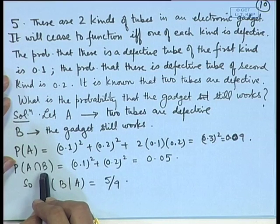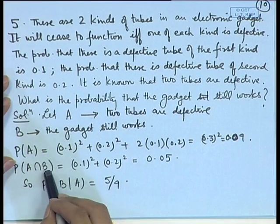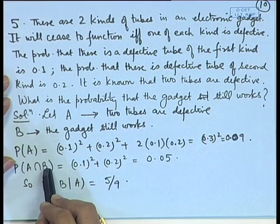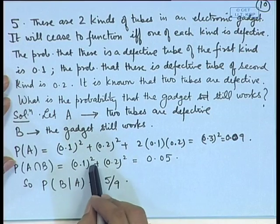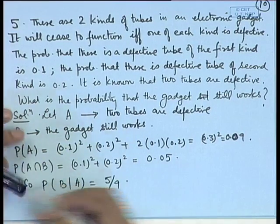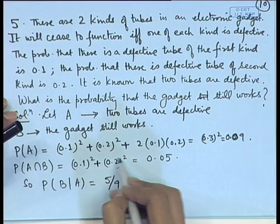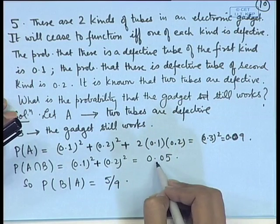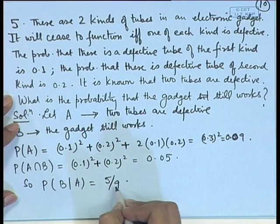For probability of A intersection B — the gadget is still working and two tubes are defective — we cannot have one tube defective of one kind and another of another kind, because in that case the gadget will not be working. Therefore, both defects are either of the first kind or both of the second kind. Using the union rule for disjoint events and independence, after simplification this turns out to be 0.05. Therefore, the conditional probability of B given A is 5/9.